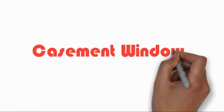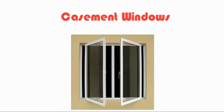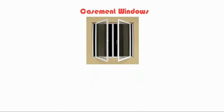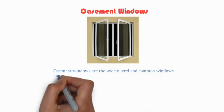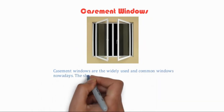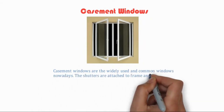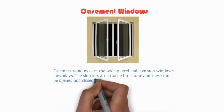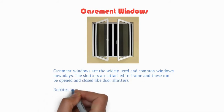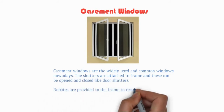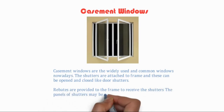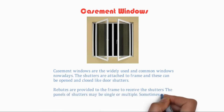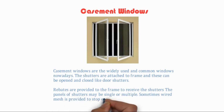Casement windows are the widely used and common windows nowadays. The shutters are attached to the frame and can be opened and closed like door shutters. Rebates are provided to the frame to receive the shutters. The panels of shutters may be single or multiple. Sometimes a wired mesh is provided to stop flies from entering.